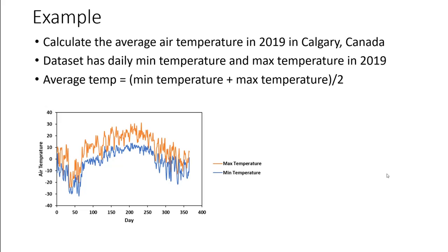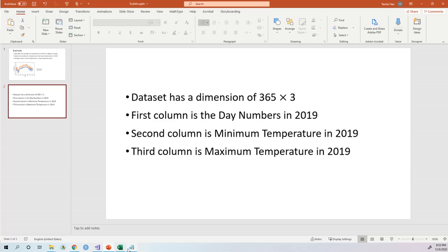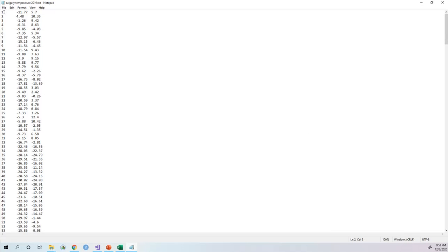The way to calculate the average temperature is very simple — it's just the minimum temperature plus the maximum temperature divided by two. The data set has a dimension of 365 times 3. The first column is the day numbers in 2019, the second column is the minimum temperature, and the third column is the maximum temperature. You need to calculate the average temperature based on the values in the second and third columns.